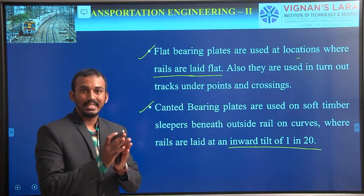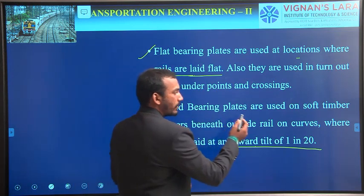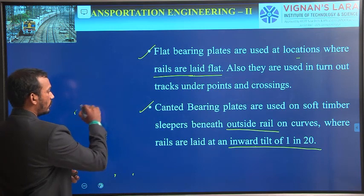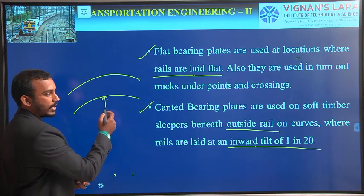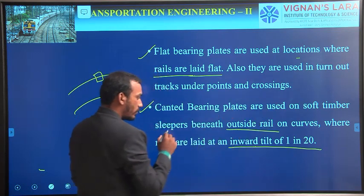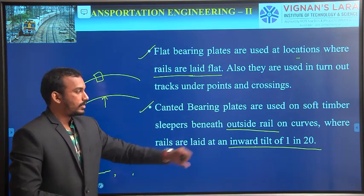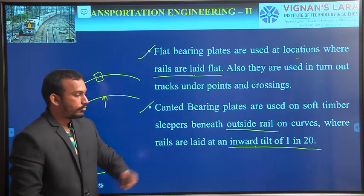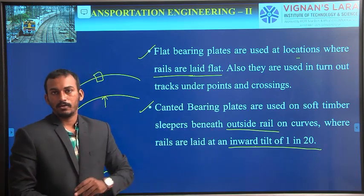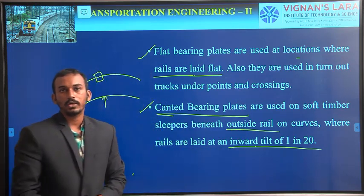We must provide the tilting of rails and coning of wheels — we have already covered coning of wheels in a previous topic. Canted bearing plates are used on soft timber sleepers beneath outside rails. For example, in a curve, the inner one is known as the inner rail and the outer one is known as the outer rail — these are used at the places of the outer rail only. They are used where rails are laid with an inward tilt of 1 in 20. These are generally used where we do not provide urging of the sleeper. If you provide urging of sleepers, then we can use flat-footed rails instead of canted bearing plates. But if we do not provide any urging of sleepers, we use canted bearing plates.